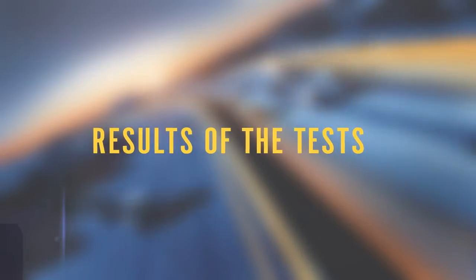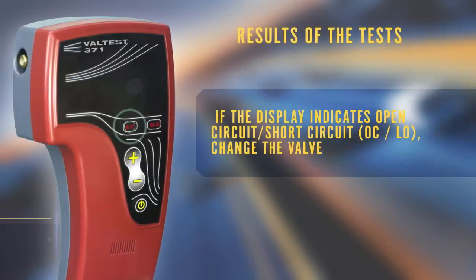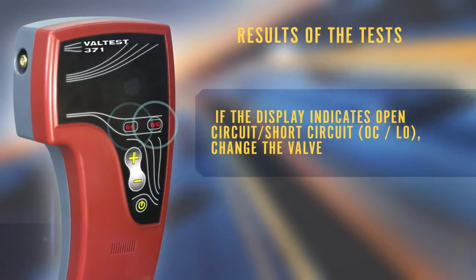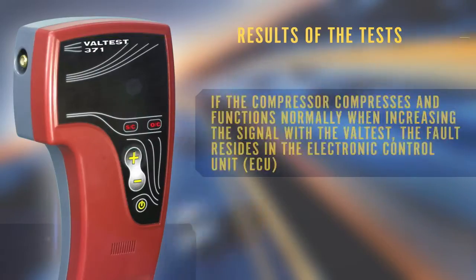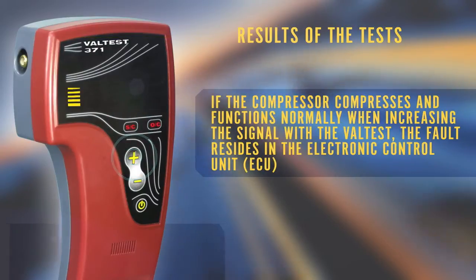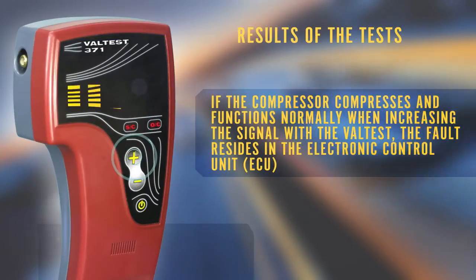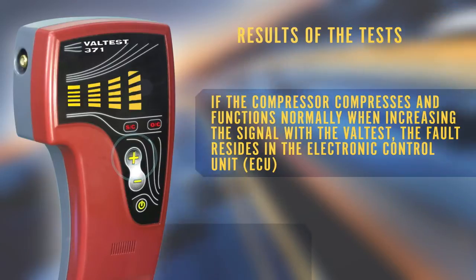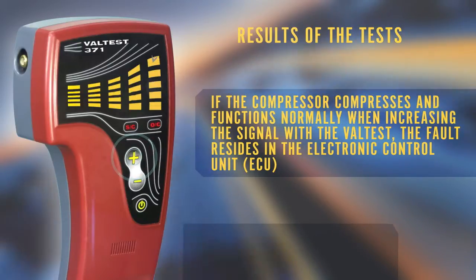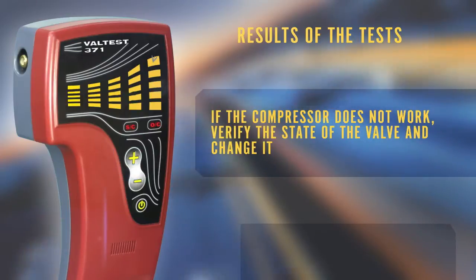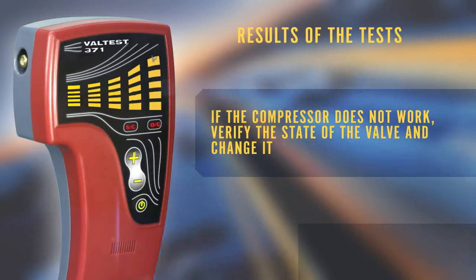Results of the test: If the display indicates open circuit or short circuit, change the valve. If the compressor compresses and functions normally when increasing the signal with the Val Test, the fault resides in the electronic control unit. If the compressor does not work, verify the state of the valve and change it.